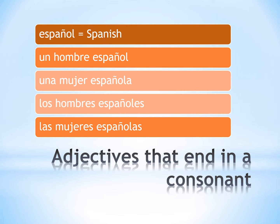Next, we have adjectives that end in a consonant, like español. This one has four forms. Un hombre español. Una mujer española. Los hombres españoles. Las mujeres españolas.